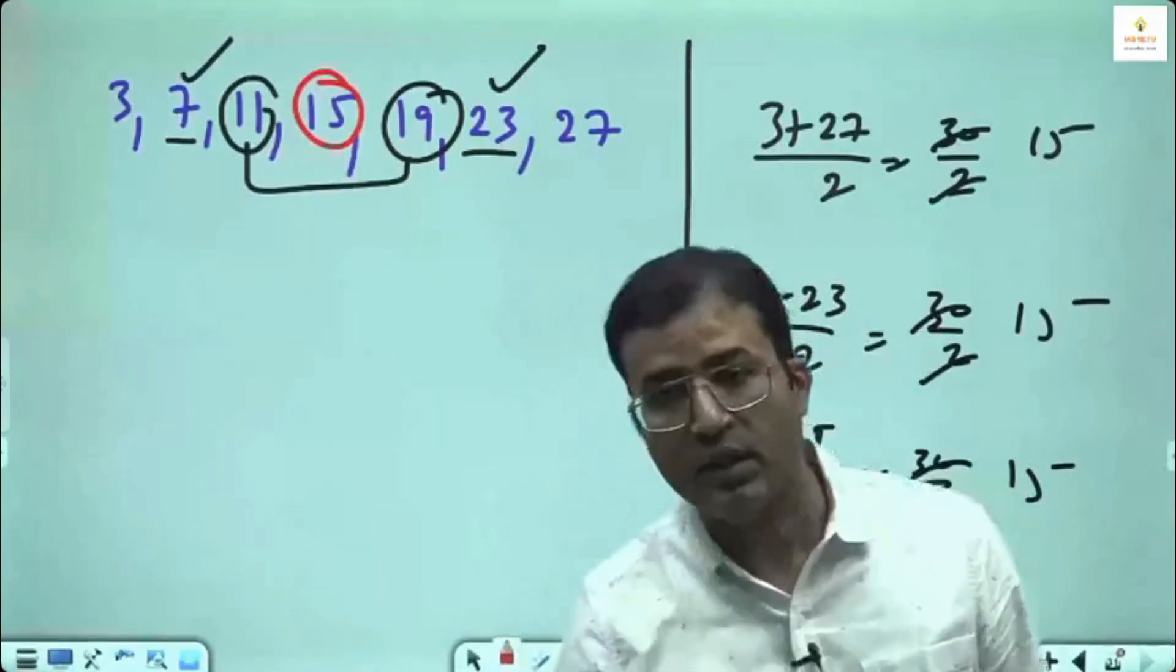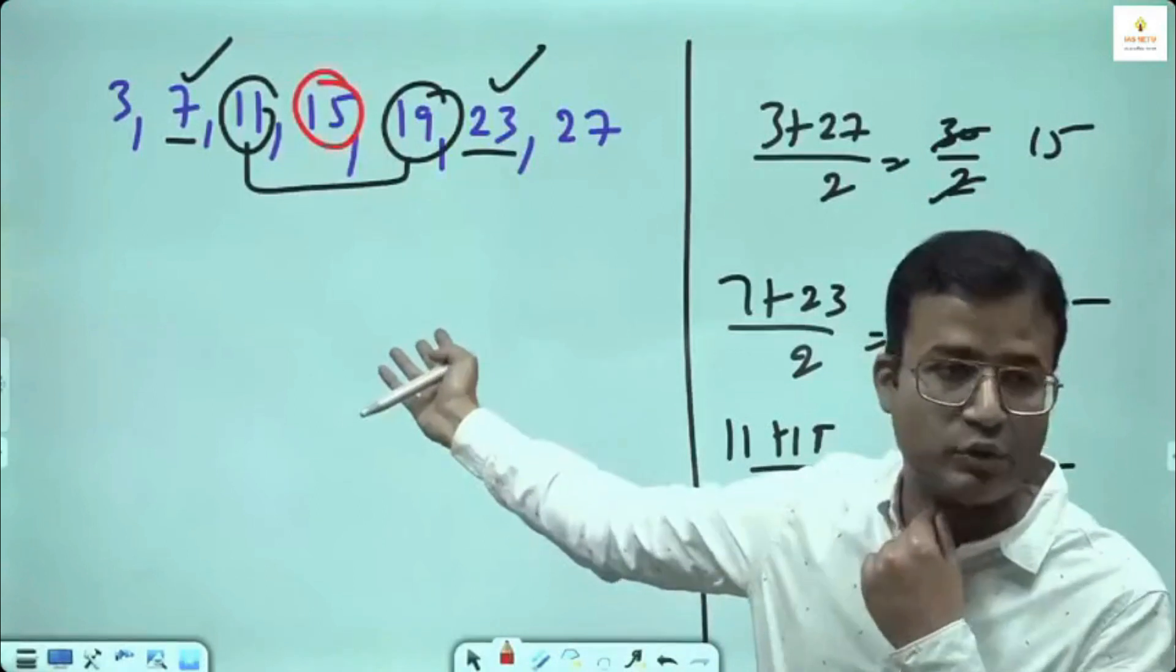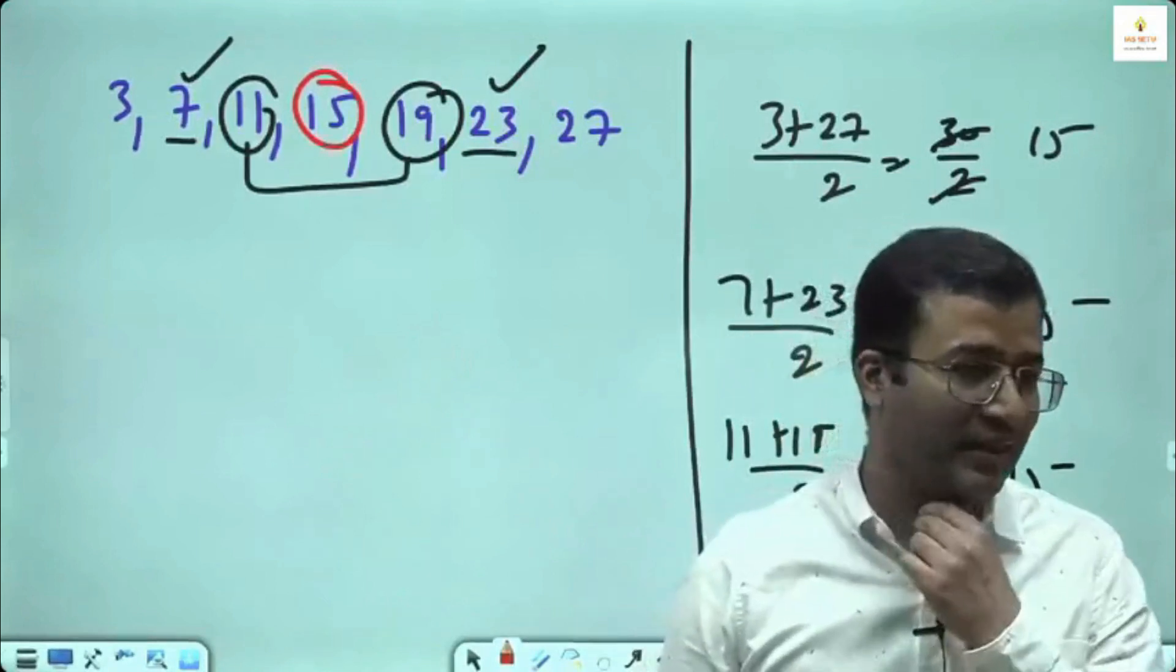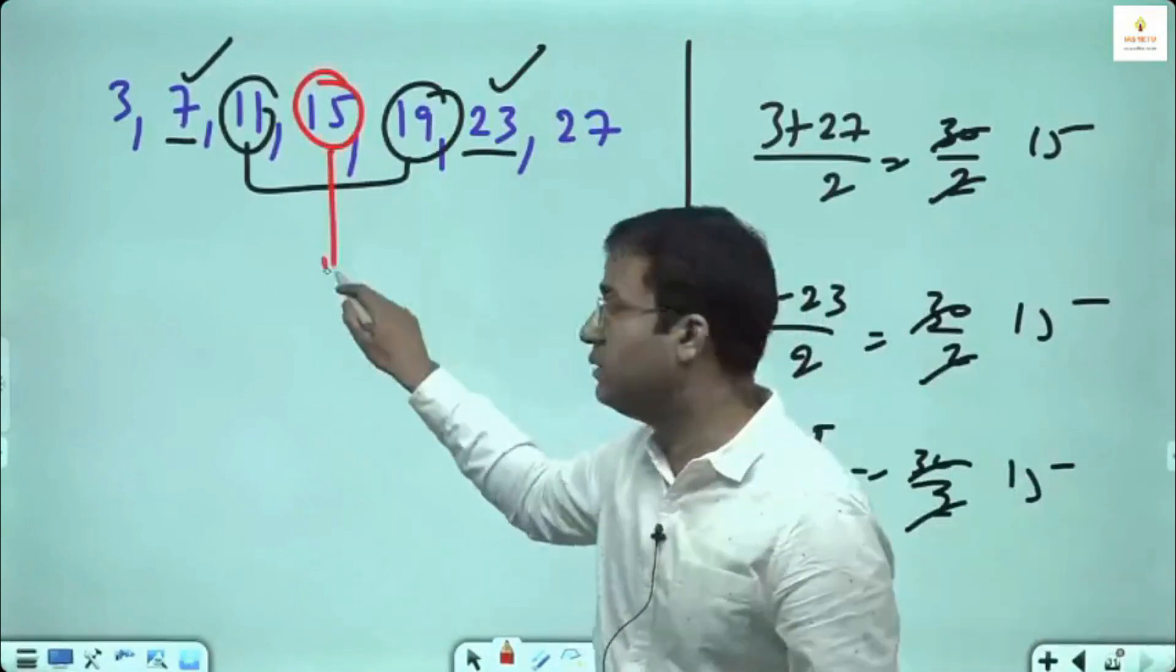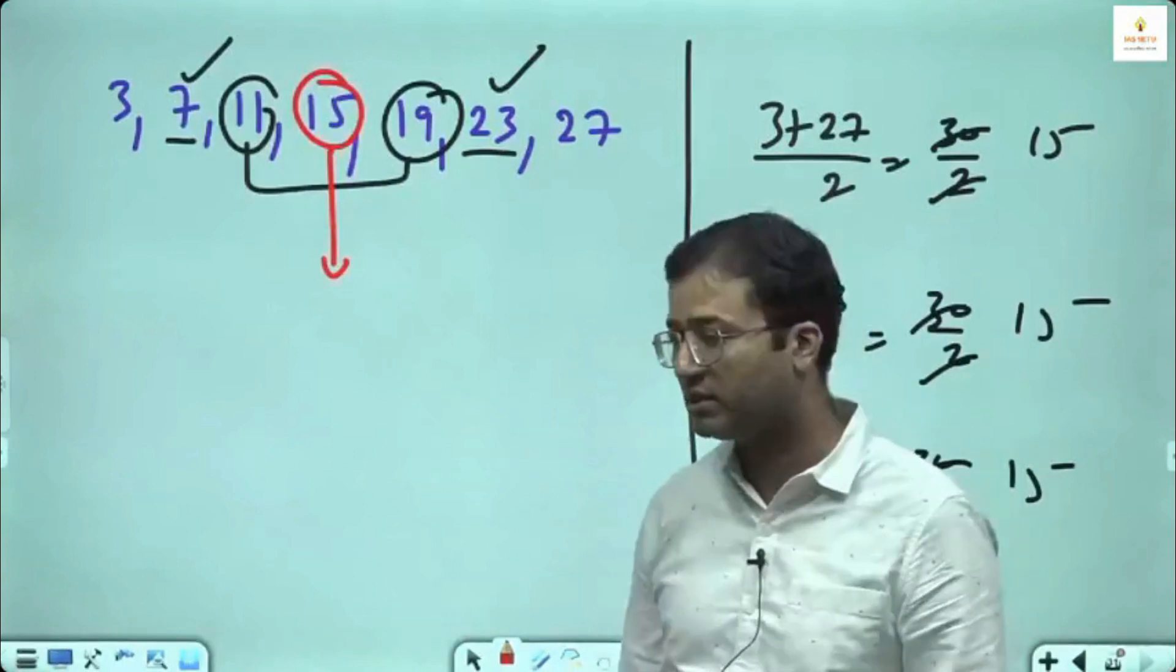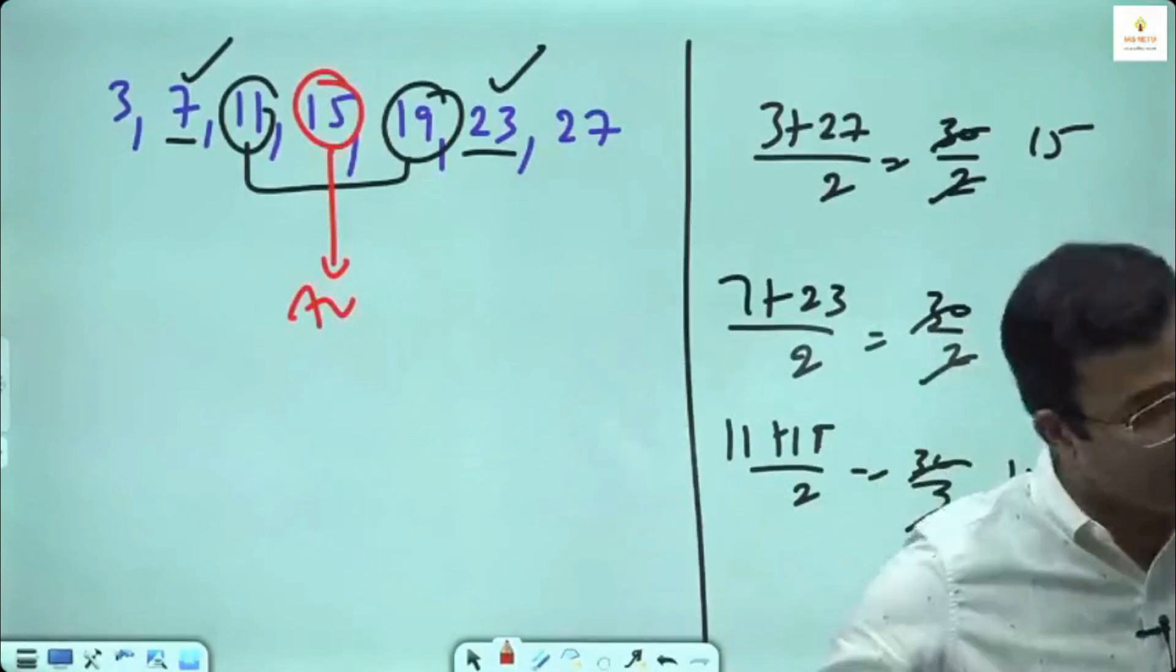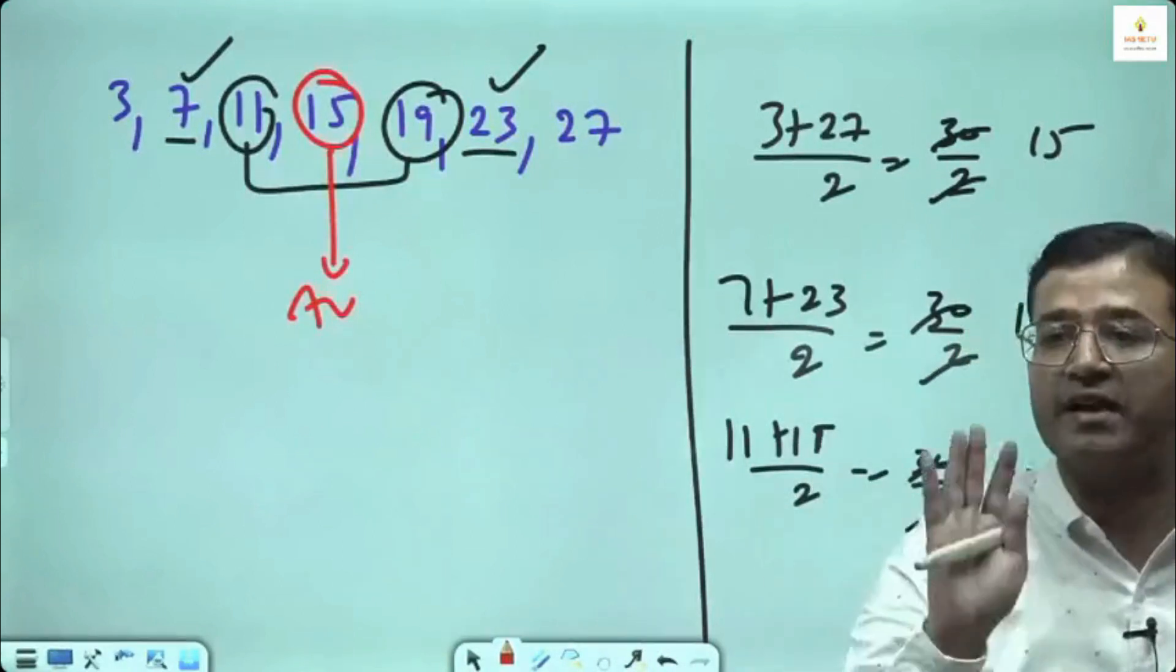Then you will say what about this 15? 15 will make pair with whom? There was a girl from Gujarat in COVID time, solo. This has pair with itself, it doesn't need anyone. If in between a single term remains, you can check that itself is sufficient to tell you the average. It itself is average. If there is no corresponding pair, that term itself is average.